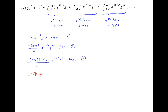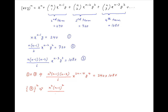Multiplying equations 1 and 3, we get on the left-hand side n² times (n-1)(n-2)/6 times x^(2n-4) times y^4, and this is equal to 240 times 1080. Taking the square of equation 2, we get on the left-hand side n²(n-1)²/4 times x^(2n-4) times y^4, and this is equal to 720 squared.